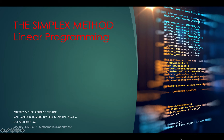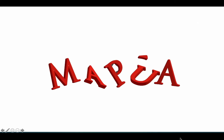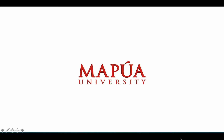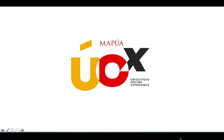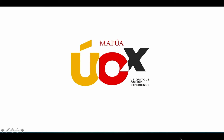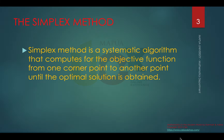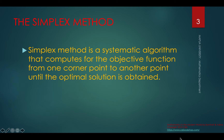In this lesson, we're going to discuss the solution to a linear programming problem using the simplex method. The simplex method is a systematic algorithm that computes for the objective function from one corner point to another point until the optimal solution is obtained.